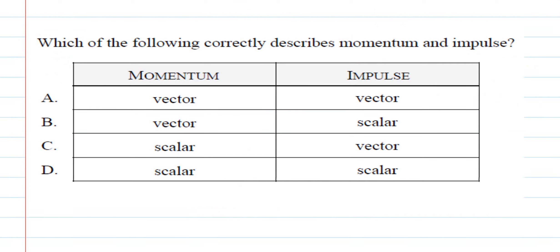The next question asks: which of the following correctly describes momentum and impulse? We know momentum is a vector and impulse is also a vector. So the best option is option A. This is a quick definition question identifying momentum and impulse as vector quantities.